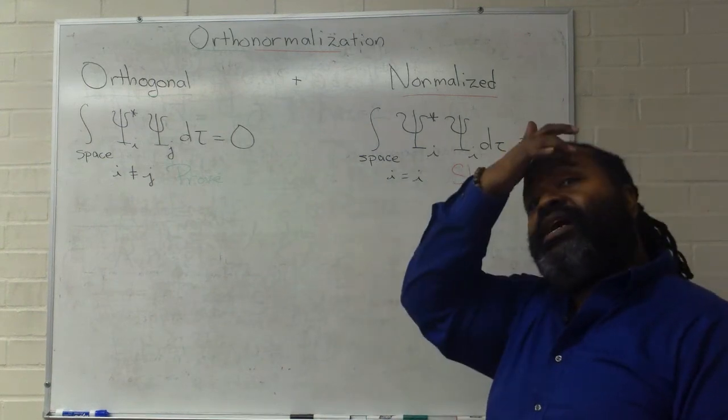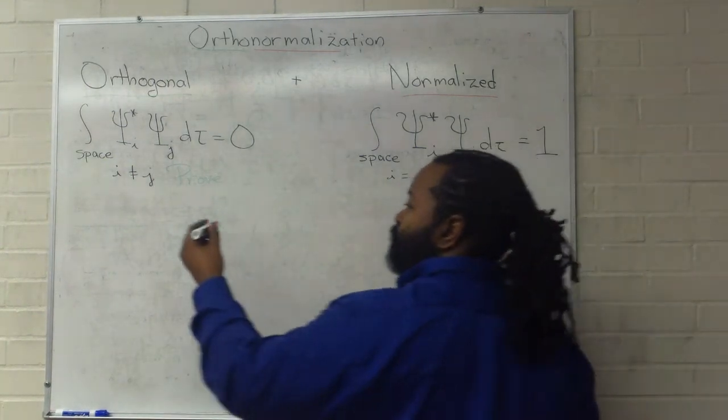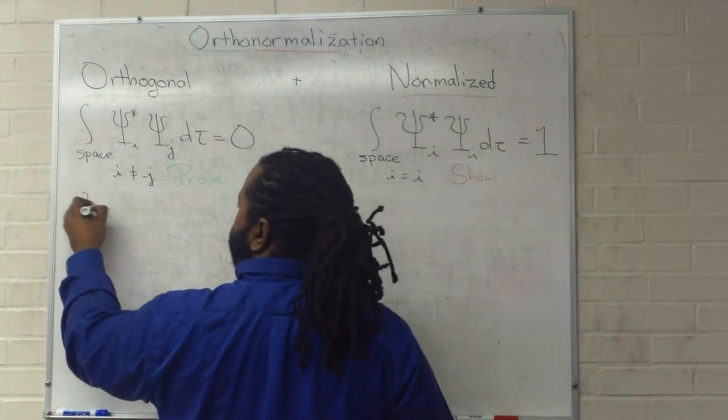So, let's simplify our lives by doing the particle in the ring. In the case of the particle in the ring, the wave function takes this form.